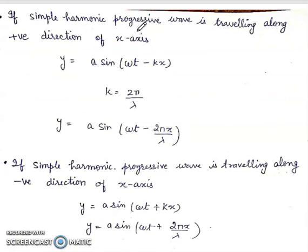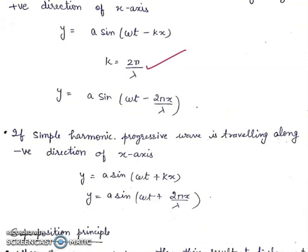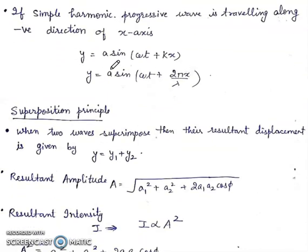If a simple harmonic progressive wave is traveling along the positive direction of the x-axis, then y = A sin(ωt − kx), where k is the angular wave number equal to 2π/λ. So y = A sin(ωt − 2πx/λ). If the wave travels along the negative x-axis, then y = A sin(ωt + kx), or y = A sin(ωt + 2πx/λ).